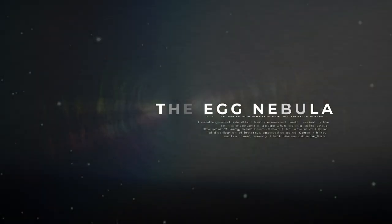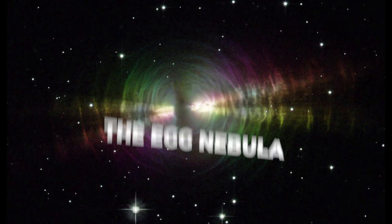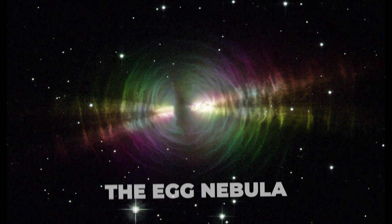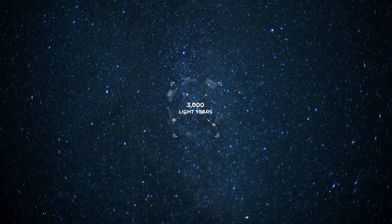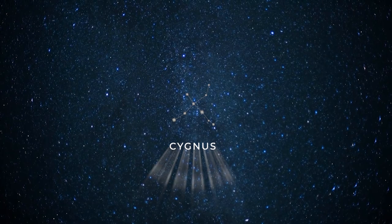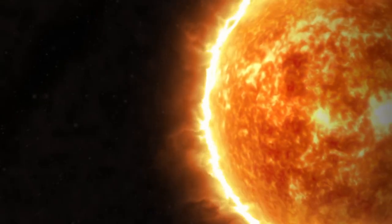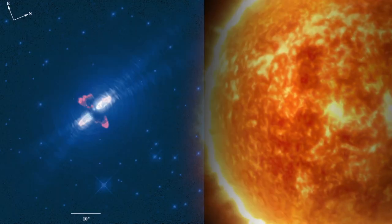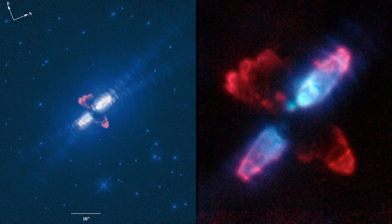Number 9. CRL 2688, The Egg Nebula. Another odd nebula only 3,000 light years away from Earth lies in the constellation of Cygnus. The star remaining in the center of this nebula is shrouded in a thick cloud of dust obscuring it from view.